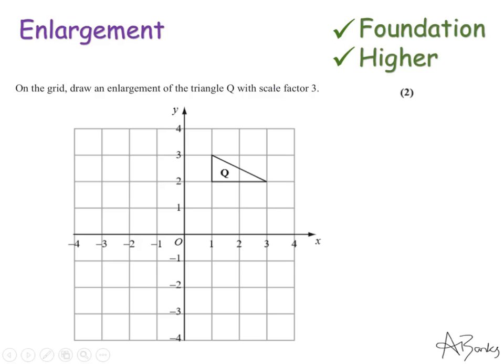This question says, on the grid draw an enlargement of the triangle Q with scale factor 3. The scale factor tells us how much bigger the shape is going to become. Because the scale factor is 3, it means everything is going to be multiplied by 3 to get my new shape.